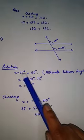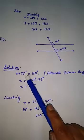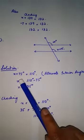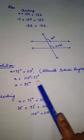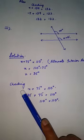So for the solution, x + 75 = 110, and when you subtract 75 on both sides, the value of variable x comes out to be 35. For checking, you use